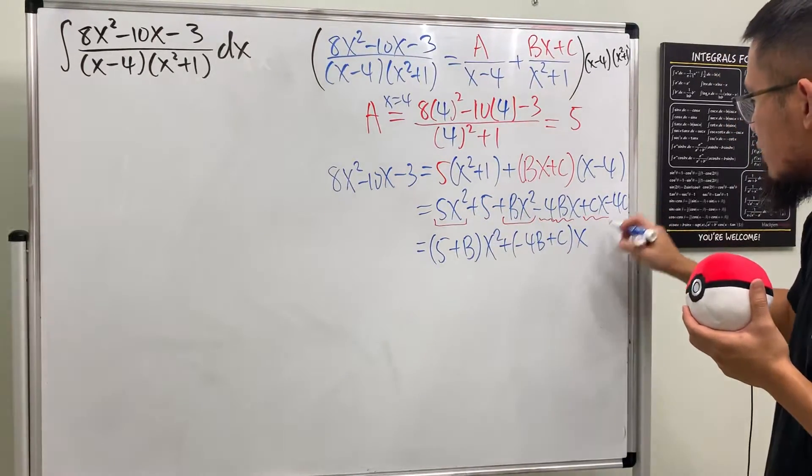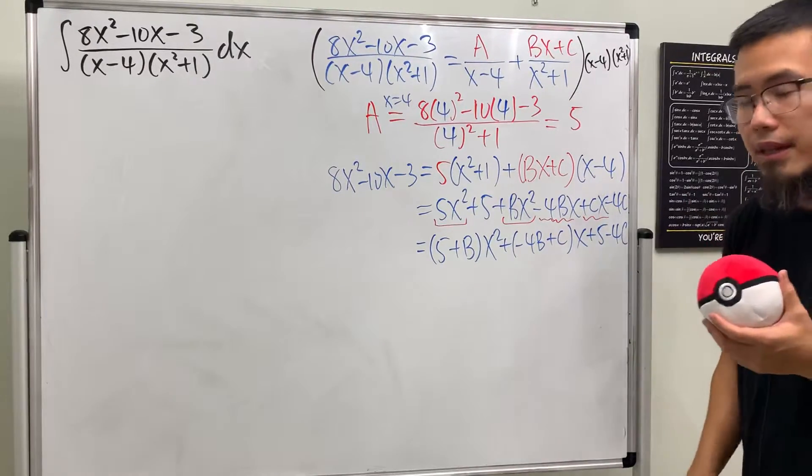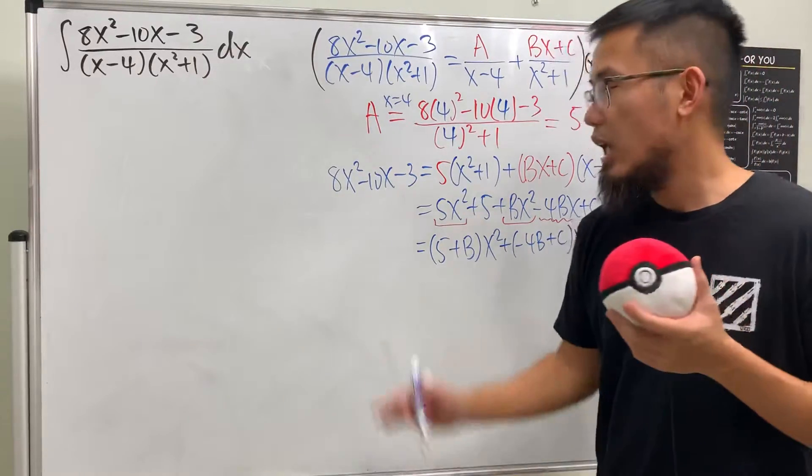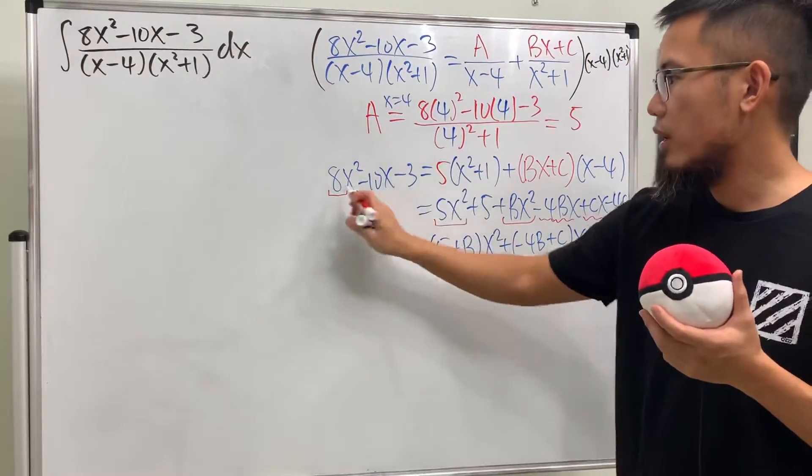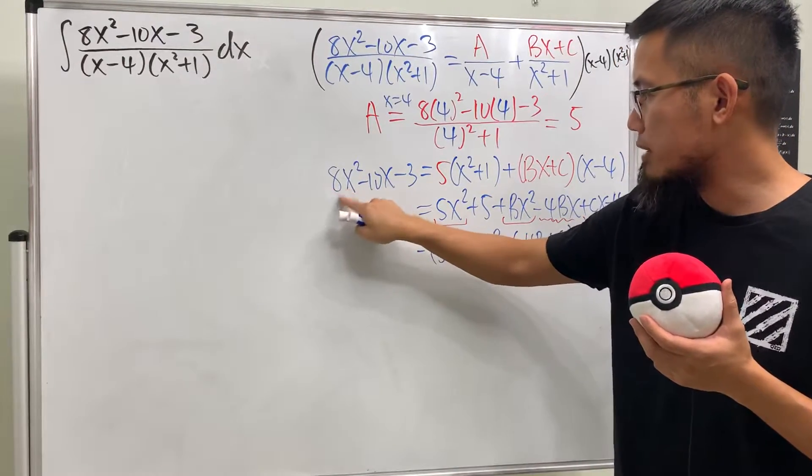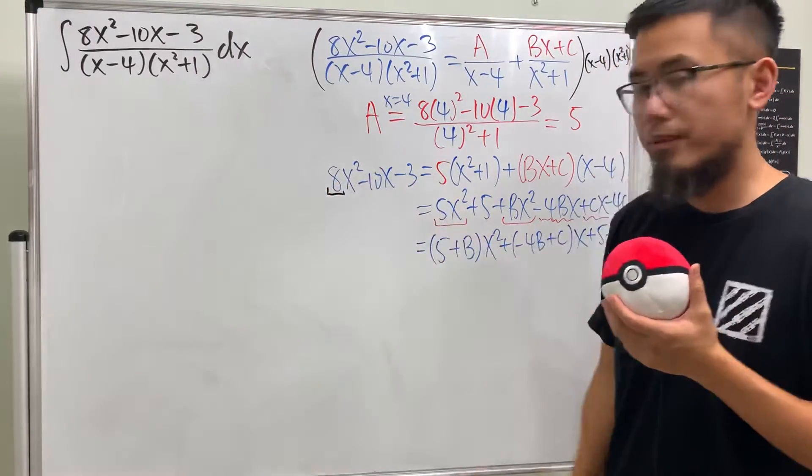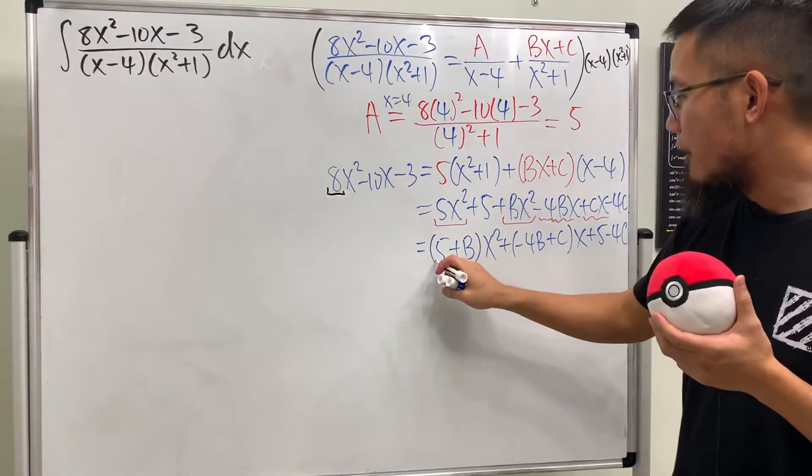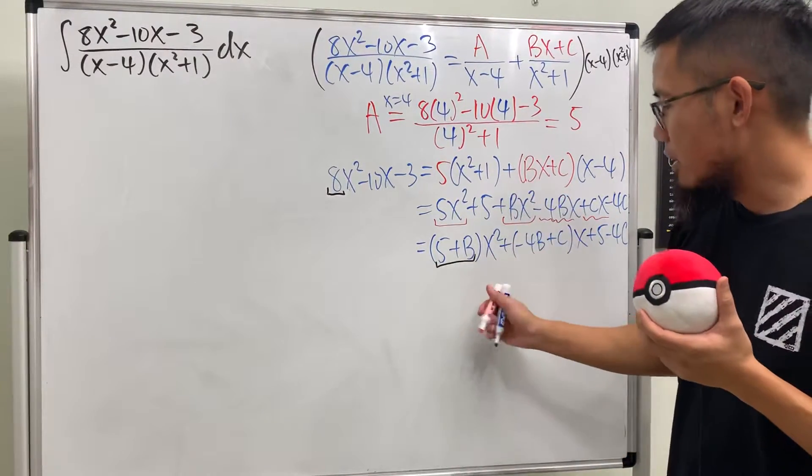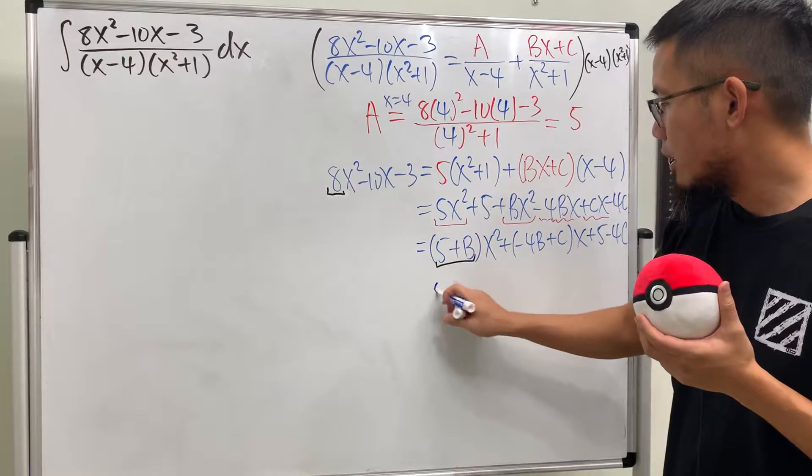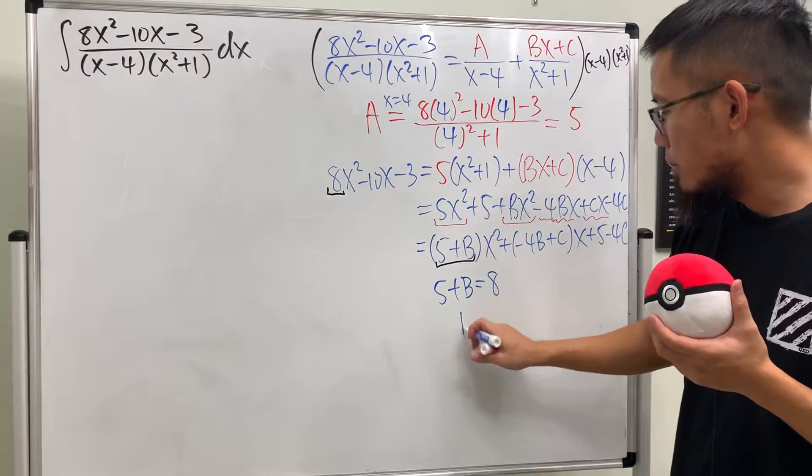And lastly we have the 5 and -4C, so + 5 - 4C. Now have a look on the left-hand side, we have 8x². On the right-hand side we have (5 + B)x². So what does that mean? This implies we must have 5 + B must be equal to 8, in another word B has to be equal to 3.